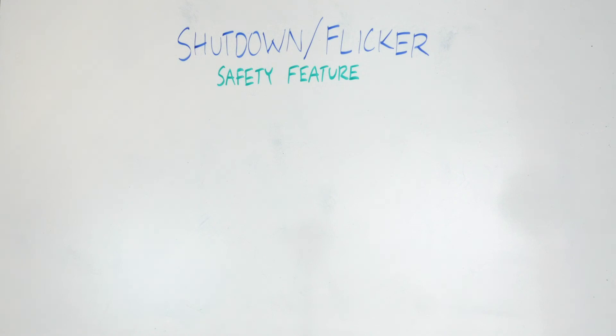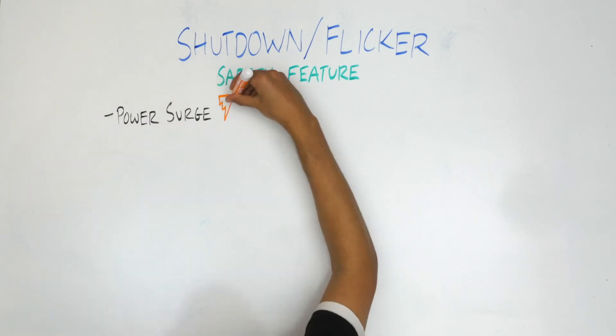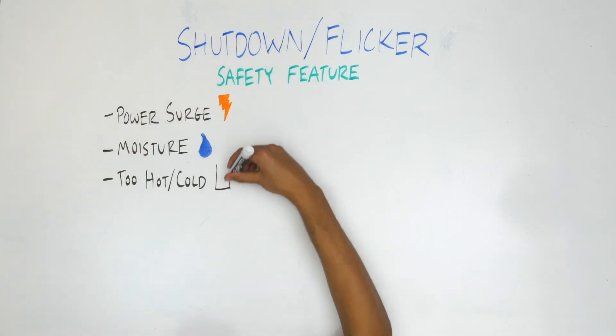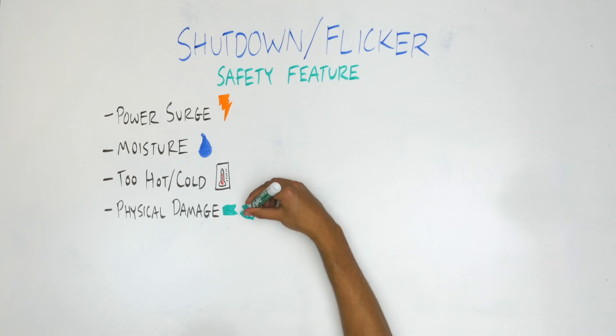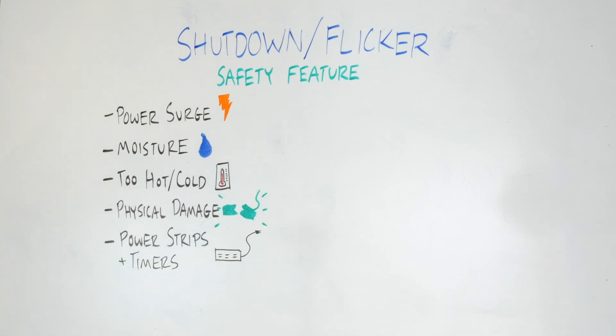Shutdown or flicker is not indicative of one specific issue. This could be provoked by a host of unique factors, such as power surges, moisture, extreme temperatures, physical damage, or stray voltage from power strips and timers, which may result in a voltage leak to the light. Any of these situations could lead the light to shut down as a safety measure.